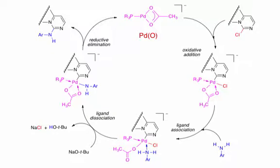To summarize, the cross-coupling reaction involves oxidative addition, followed by ligand substitution, and concludes with reductive elimination.